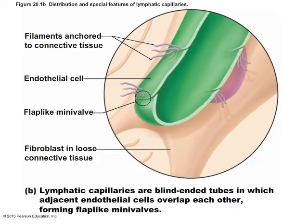Here you can see a close-up of the lymphatic capillaries. We have overlapping endothelial cells anchored by connective tissue filaments. This enables the capillaries to fill with excess interstitial fluid, but these valves very quickly seal themselves off if the pressure inside the capillary becomes greater than the interstitial pressure, preventing fluid from going backwards.